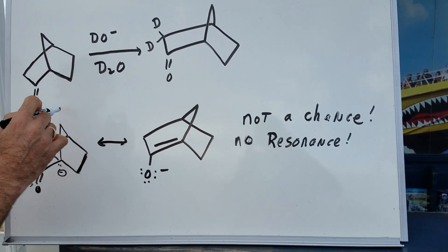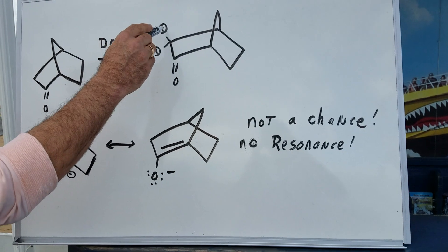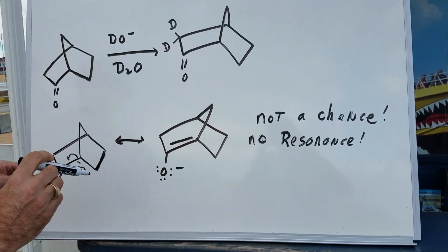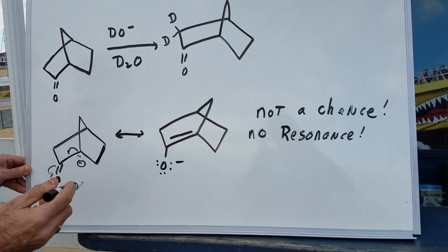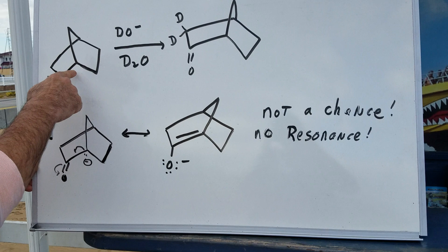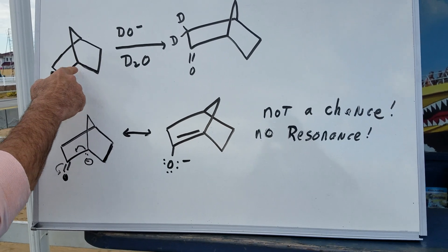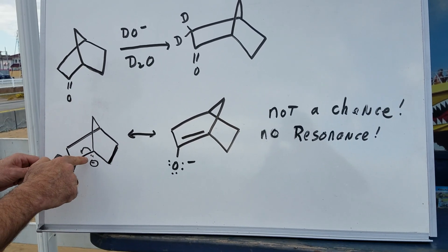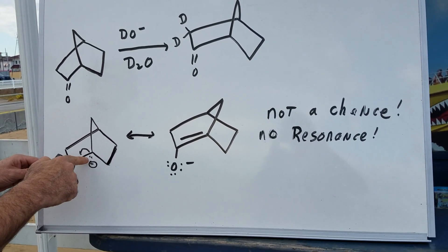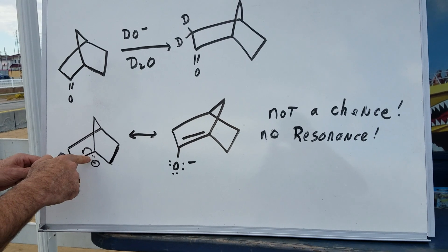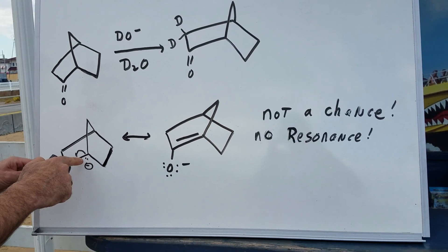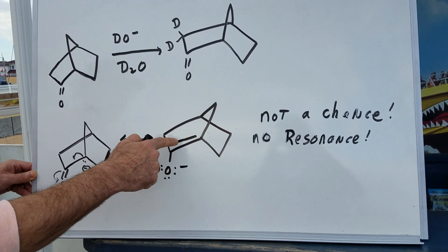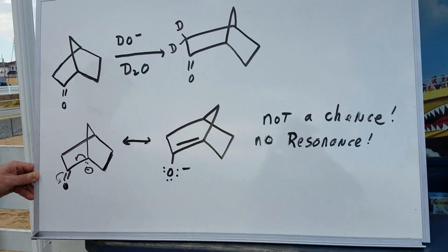It does not exchange. So the answer: there would only be two hydrogens that exchange. Now the question is, why not the alpha proton at the bridgehead? If you remove the alpha proton from the bridgehead, you would get this anion and you would very easily be able to write a resonance form.